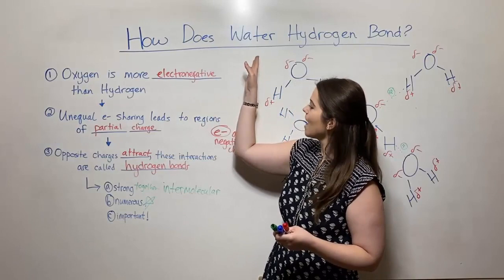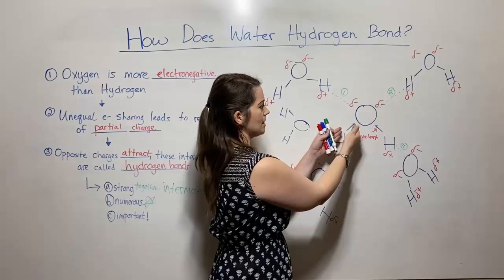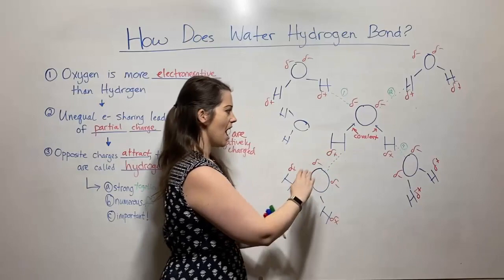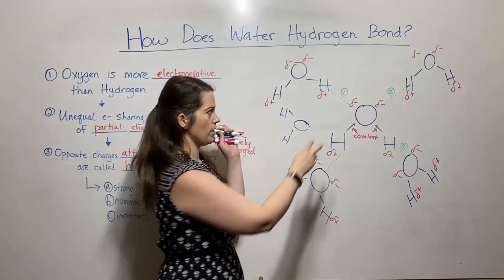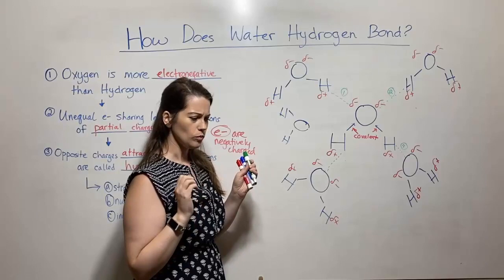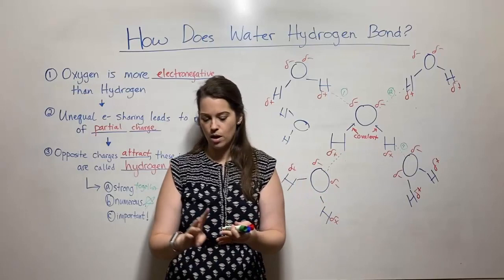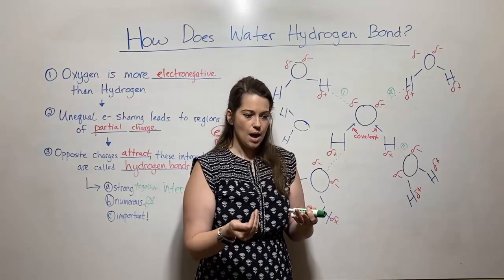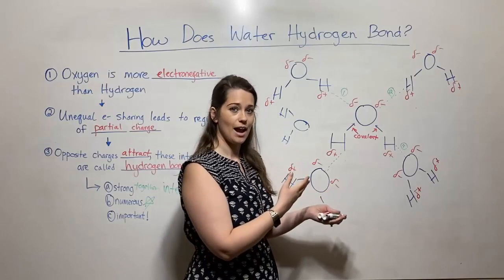To summarize: how does hydrogen bonding work? It all goes back to the fact that oxygen is more electronegative. That makes the electrons shared unequally, which gives us the partial charges, and those partial charges are how two water molecules interact through the attraction of their opposite partial charges. If you're interested in learning more, you can check out my video on the four levels of protein structure to learn how hydrogen bonds, ionic bonds, covalent bonds, and disulfide bonds contribute to proteins having the correct structure and function.